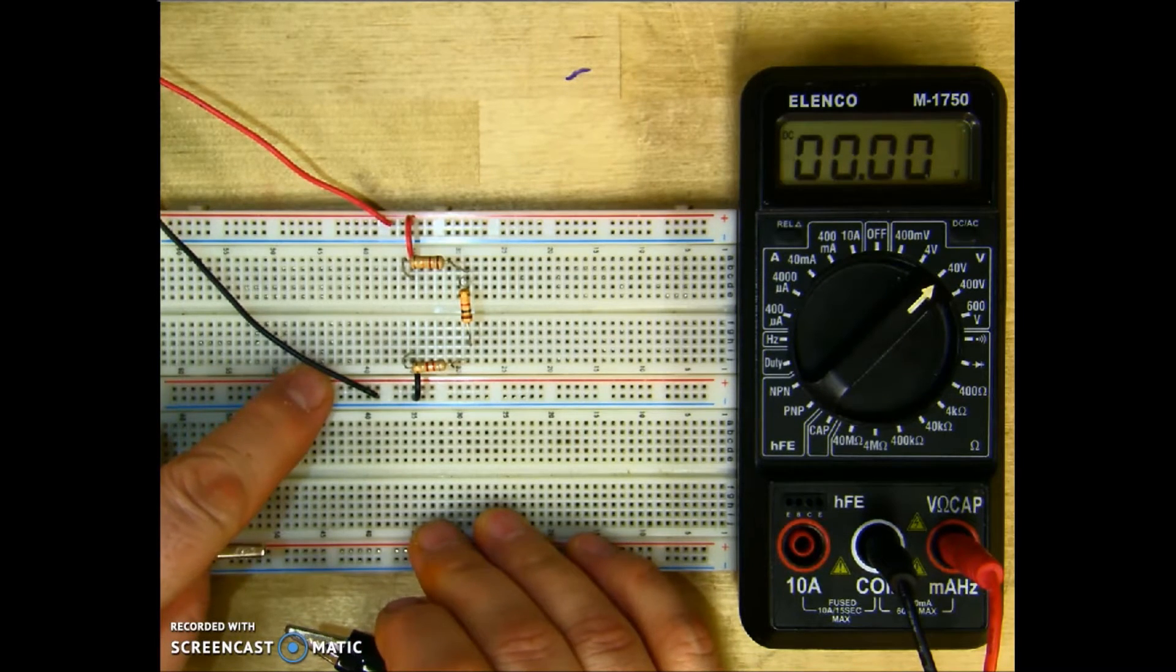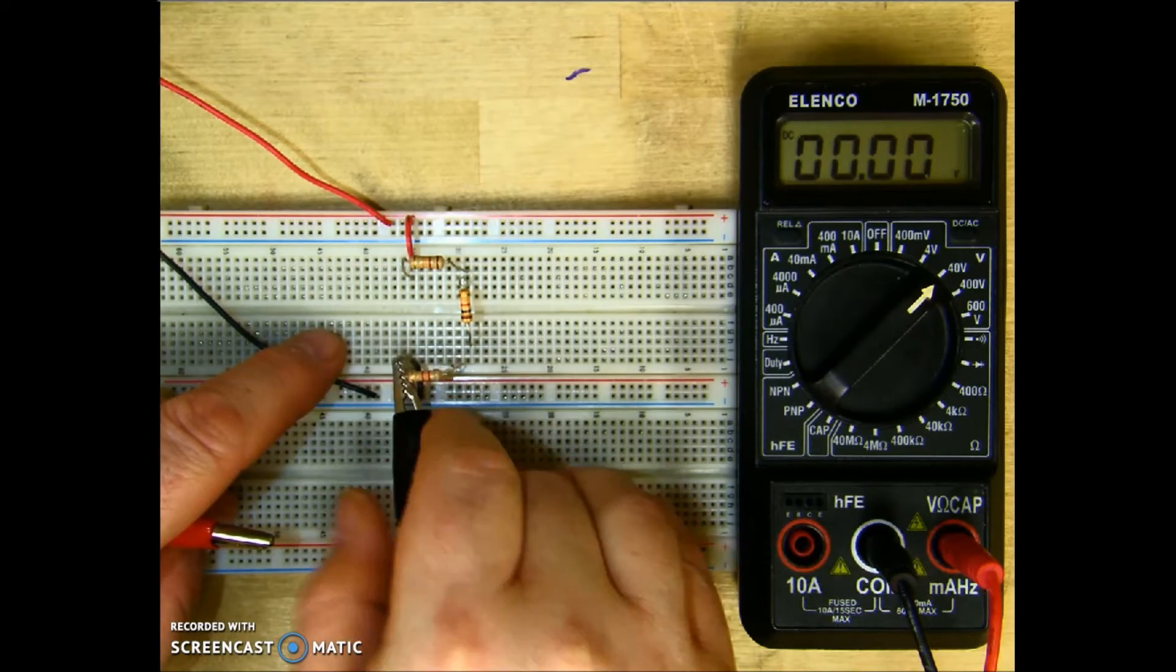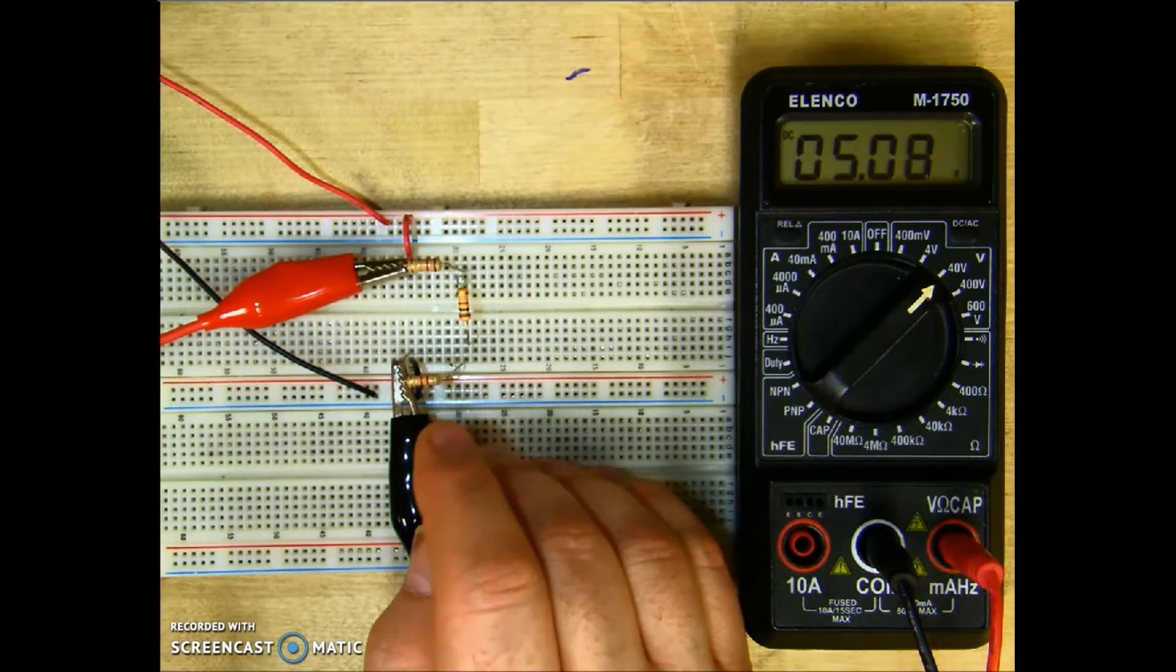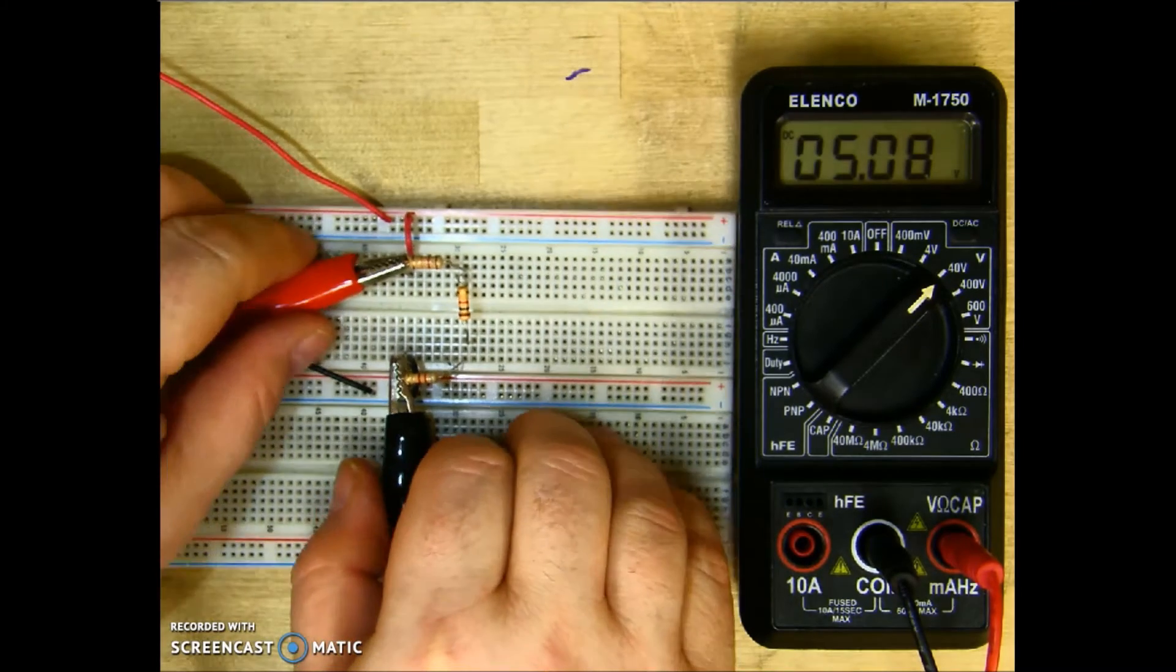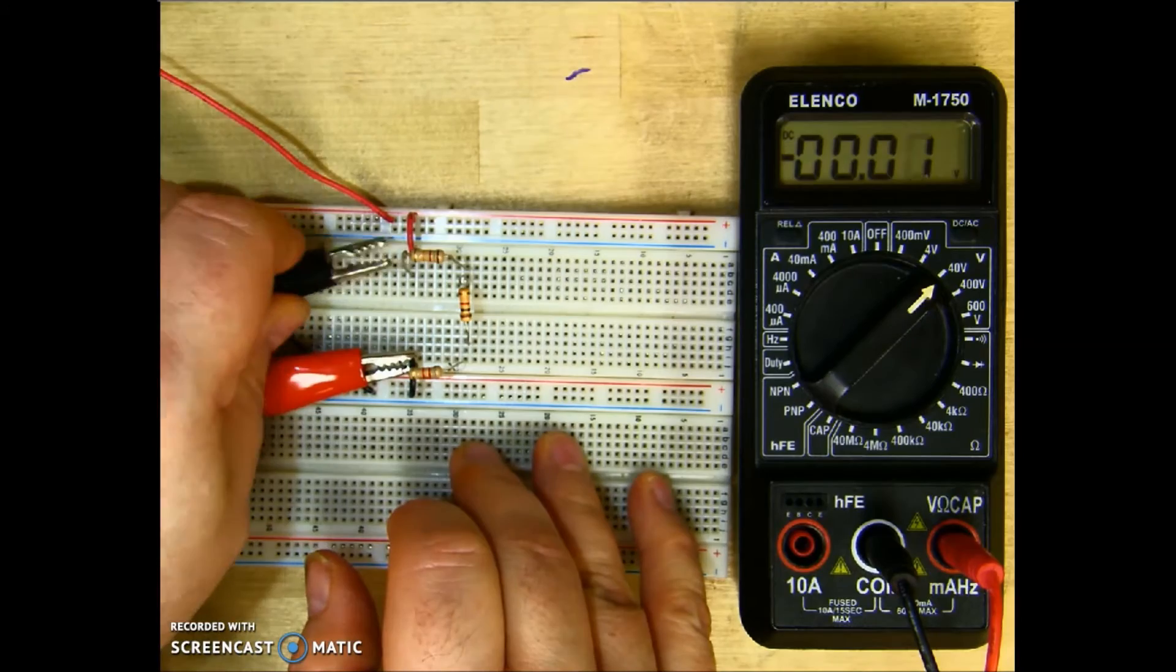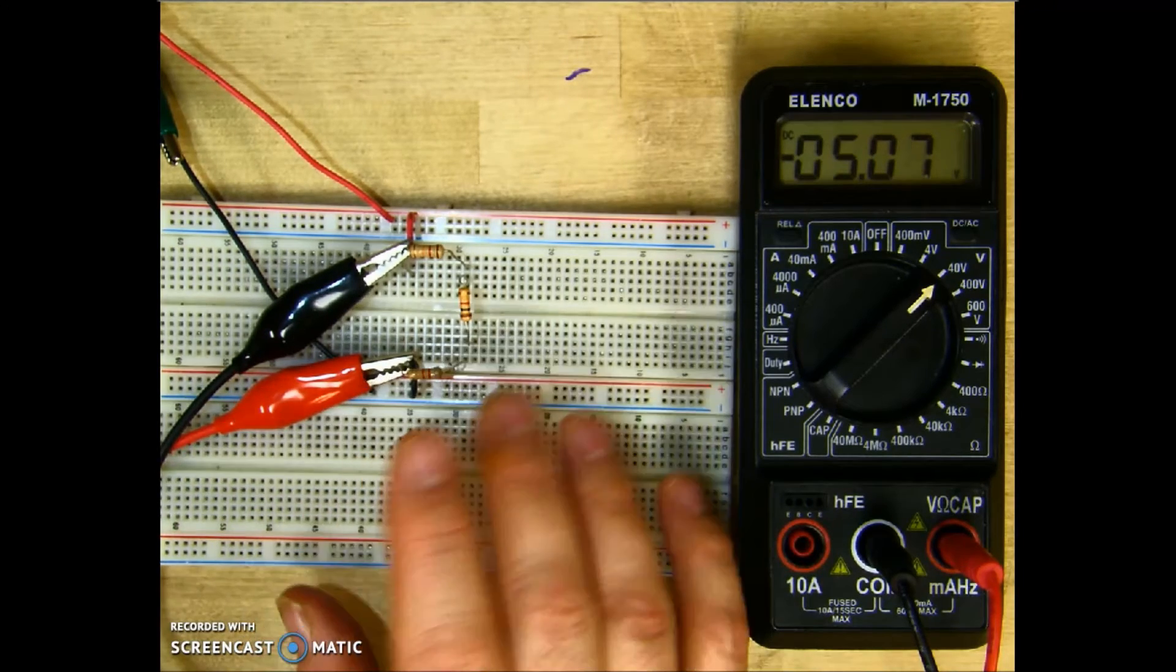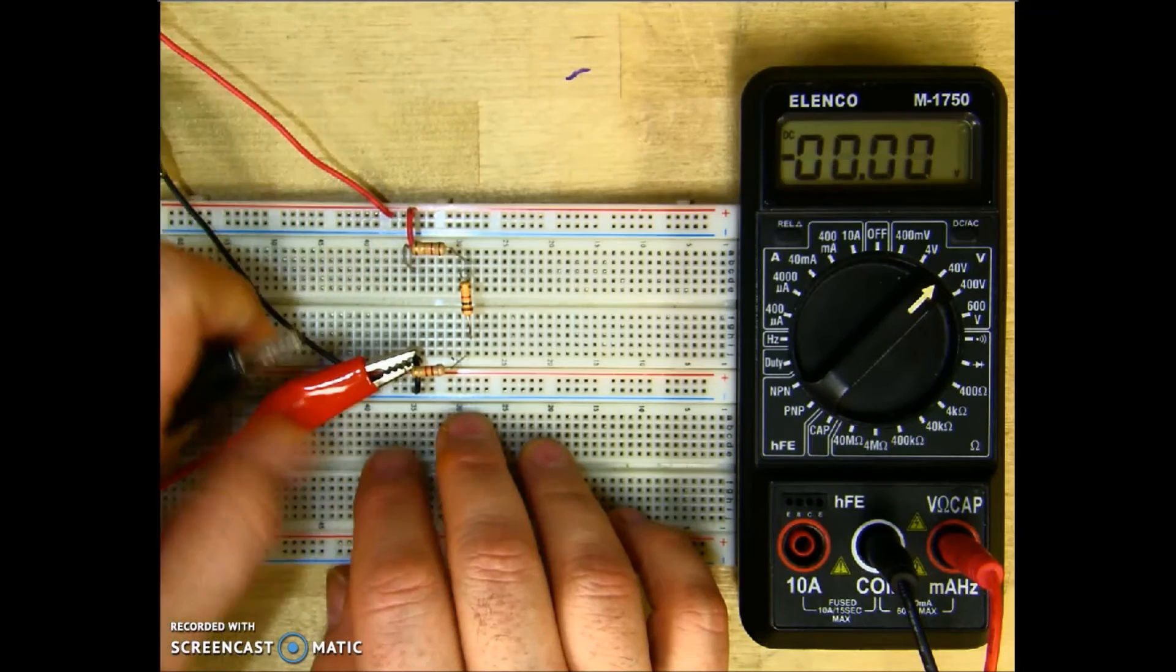This lead here is connected to my negative terminal. So I'm going to take my negative of my meter and connect it here. And this is connected to the positive of my source. So I'll go ahead and connect it right here. And I'm reading 5.08 volts. Now if I was to reverse these leads, I would still get the same voltage reading. But I would have a negative sign there, as you see, indicated right there. That just means current is going in the opposite direction than the way we have our meter set up.